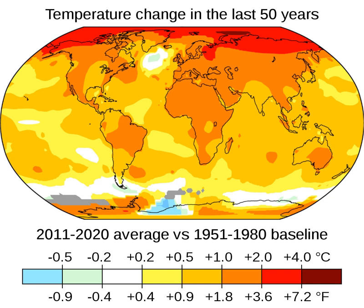There are different variants of climate denial: some deny that warming takes place at all, some acknowledge warming but attribute it to natural influences, and some minimise the negative impacts of climate change. Manufacturing uncertainty about the science later developed into a manufactured controversy, creating the belief that there is significant uncertainty about climate change within the scientific community in order to delay policy changes. Strategies to promote these ideas include criticism of scientific institutions and questioning the motives of individual scientists. An echo chamber of climate-denying blogs and media has further fermented misunderstanding of climate change.